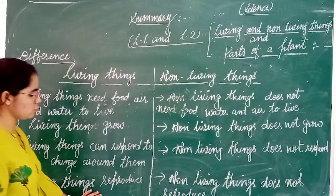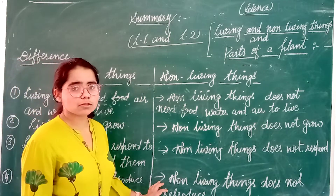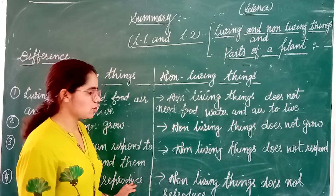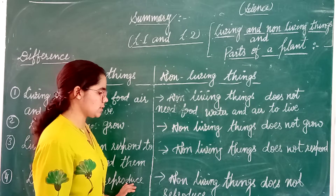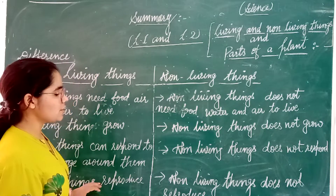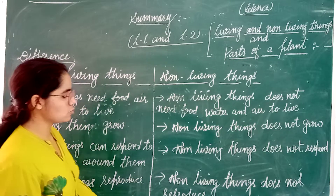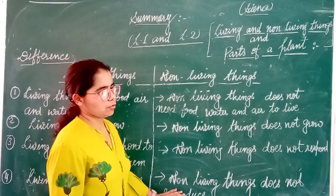Living things reproduce, meaning they give birth to young ones. They increase in number over time, but non-living things do not reproduce.